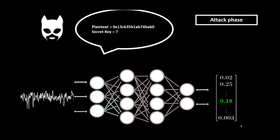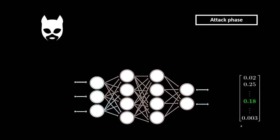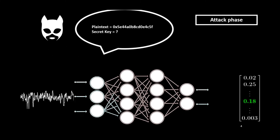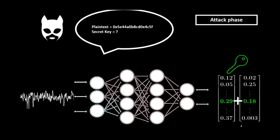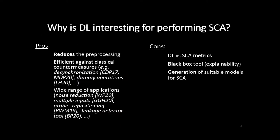Unfortunately, usually one physical trace is not enough to retrieve the correct target value. So the adversary has to predict the score associated to each key hypothesis multiple times, and finally aggregate all the predictions to recover the secret information. In comparison with classical profiling attacks, the deep learning approach is useful because it reduces the preprocessing phase and still performs well even if traditional countermeasures like desynchronization or dummy operations are implemented. However, due to the black-box nature of neural networks, it can be challenging to explain and interpret its decision-making and generate suitable architectures.